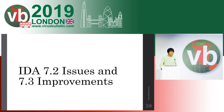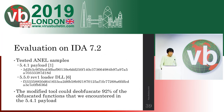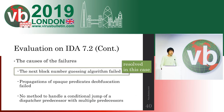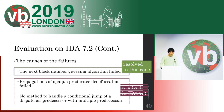In this section I explained the issues in IDA 7.2 and the improvements in 7.3. I tested the two ANEL samples on IDA 7.2, and the modified tool could de-obfuscate 92% of the obfuscated functions encountered in the former sample. The causes of failures are: first, the next block number guessing algorithm failed — this issue has been resolved in this case but may be problematic in the future because guessing is not perfect. The remaining two issues have been resolved in IDA 7.3.